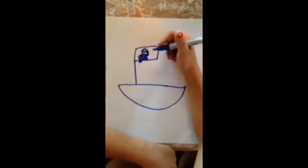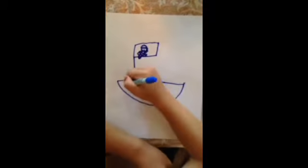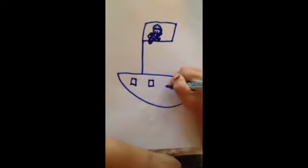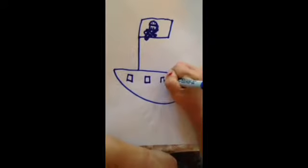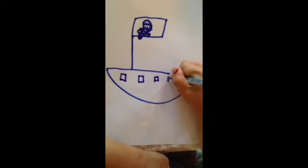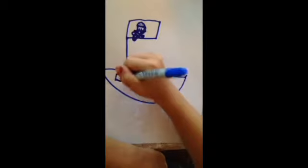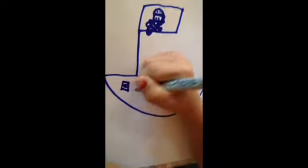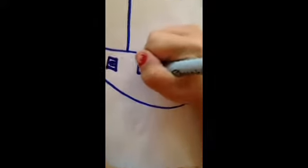Then I'm gonna draw one, two, three, four. I'm gonna draw a circle then two lines, these are for the cannons.